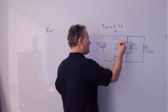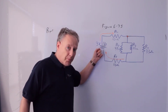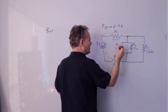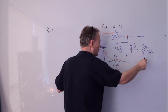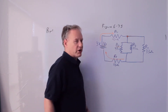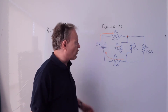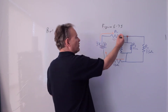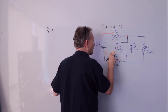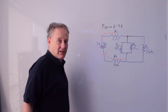The current goes through R1, reaches a junction, and has three options: it can go through R2, or through R3, or through R4. All paths lead back to the battery. So the current divides among R2, R3, and R4 in parallel, while all current must pass through R1 and R5.